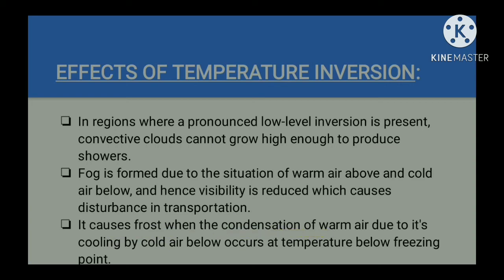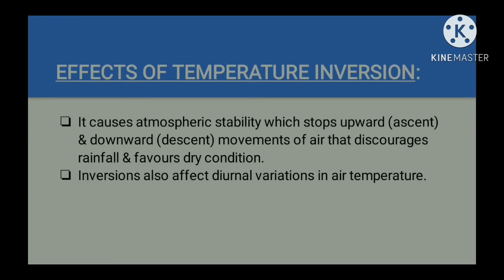Most people therefore live on the sloping areas of mountains. Urban smog is also seen due to temperature inversion. Temperature inversion also causes atmospheric stability, which discourages rainfall and favors dry conditions. The inversion caused by subsidence of air results in anticyclonic conditions, increasing aridity. This is why the western parts of continents situated between 20 and 30 degrees latitude are characterized by anticyclonic conditions, representing the most widespread tropical deserts of the world.